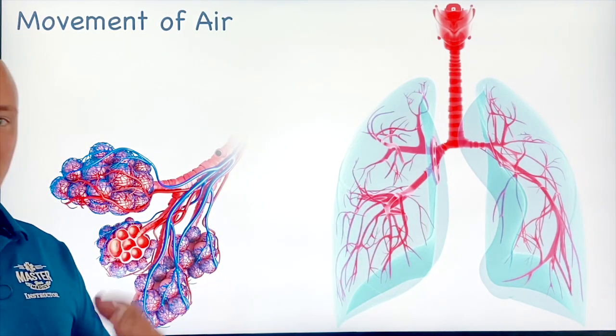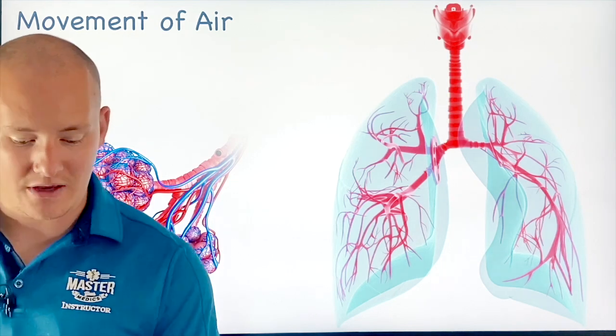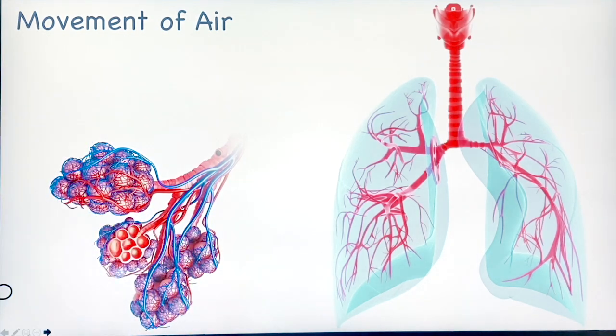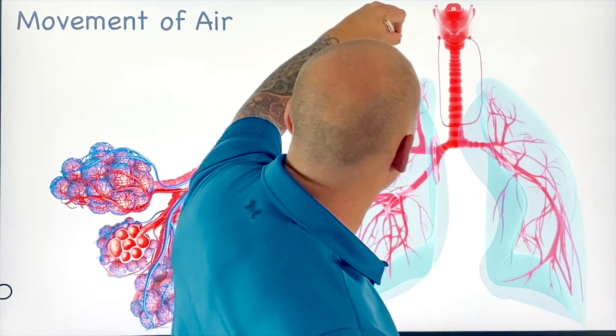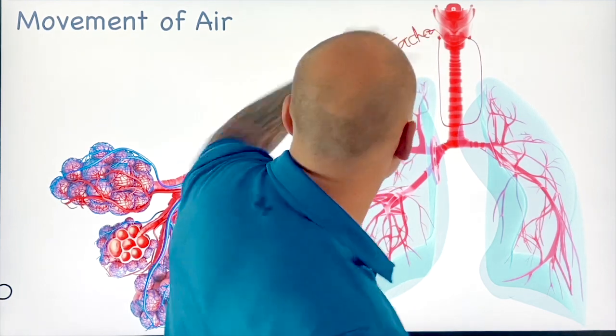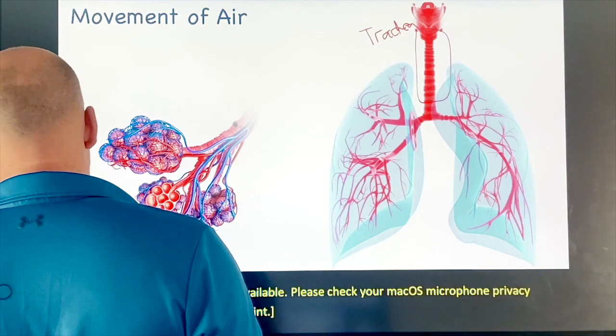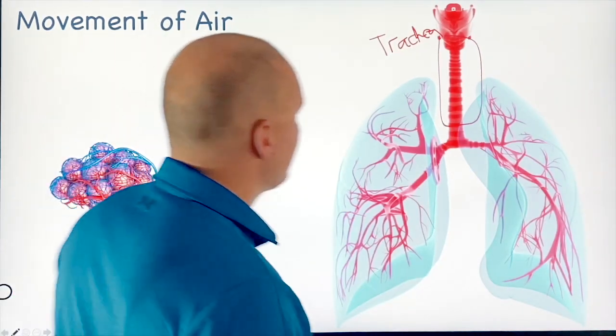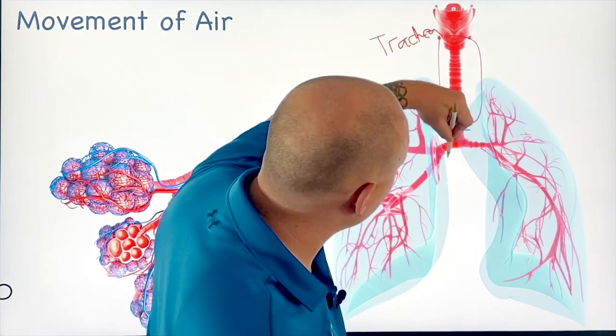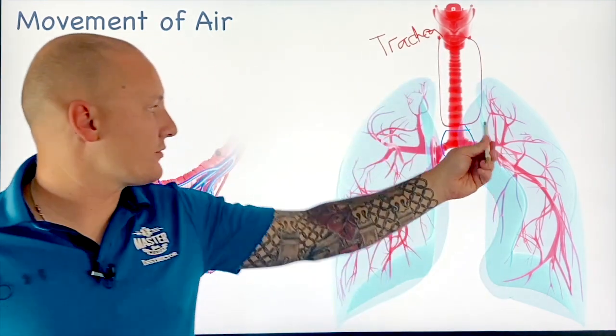So let's look at this. We have a few different main pieces of the lung itself. We have the trachea here. That's the trachea. I'm going to change the color a little bit here.